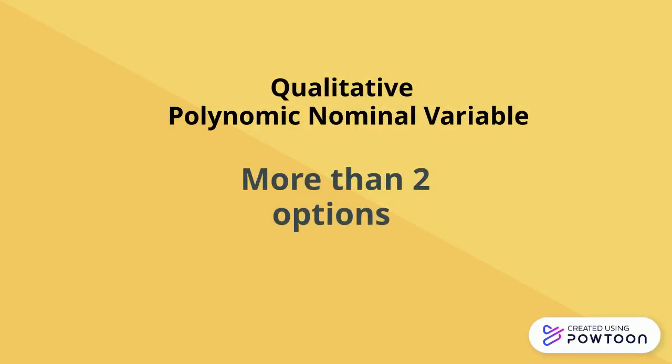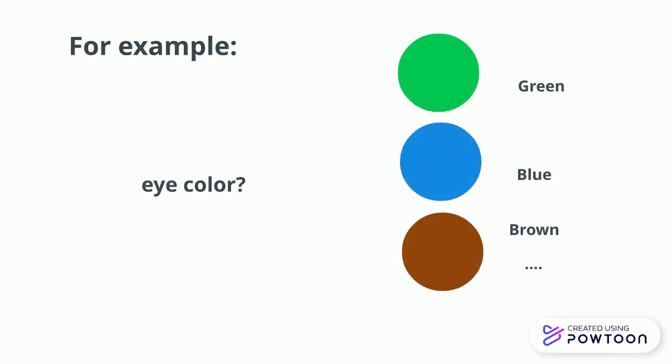Qualitative polynomic nominal variables also have more than two options, but are not characterized by having an order to the scale. For example, eye color: green, blue, brown, and others.